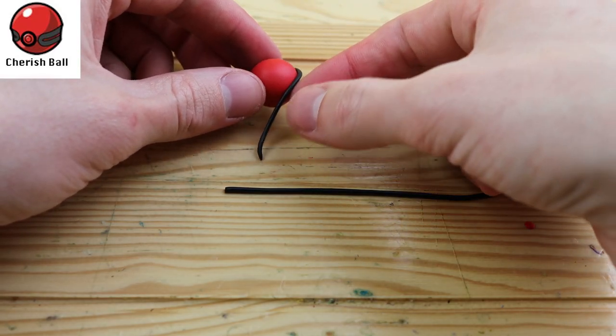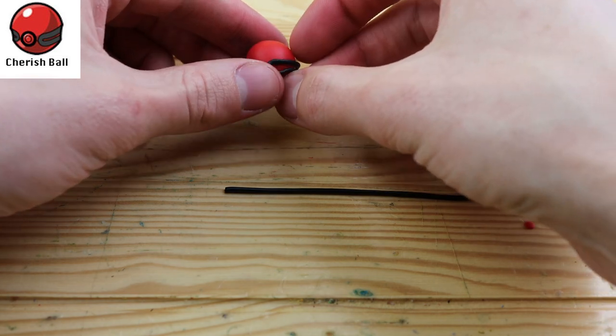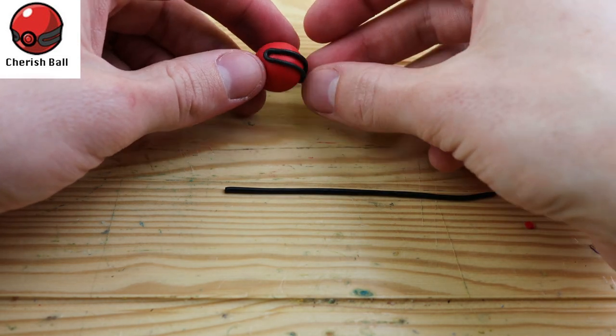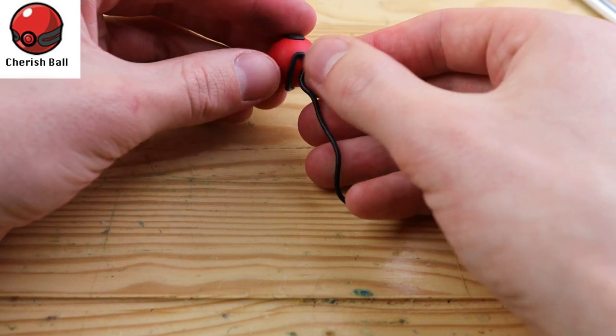This is one of those pokeballs that I've never heard of before, but the description of it says that event pokemon are usually distributed inside of a cherish ball.